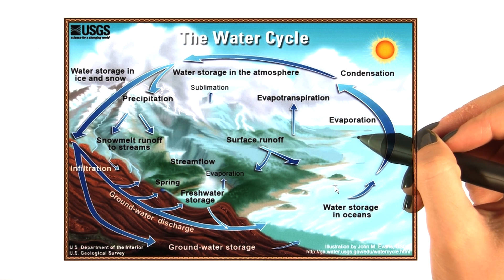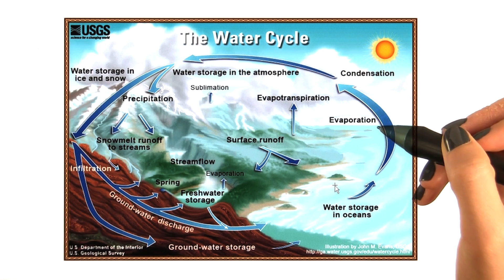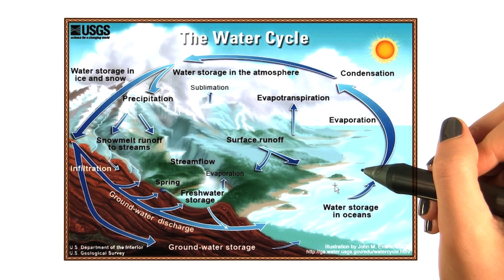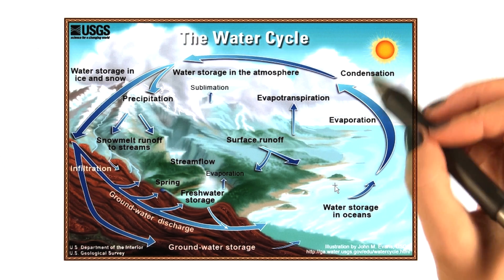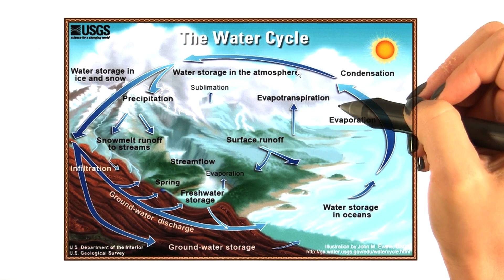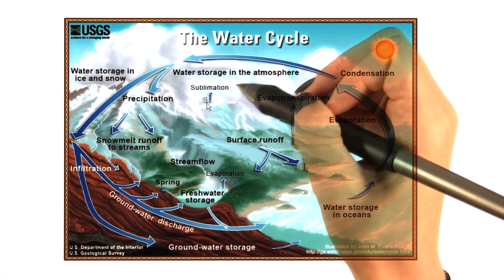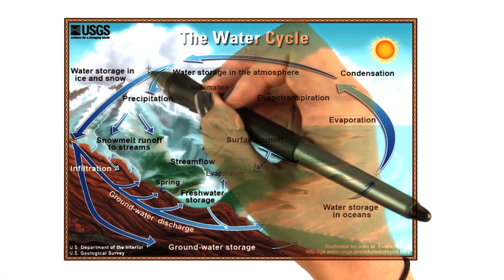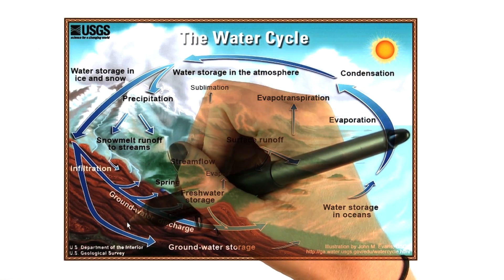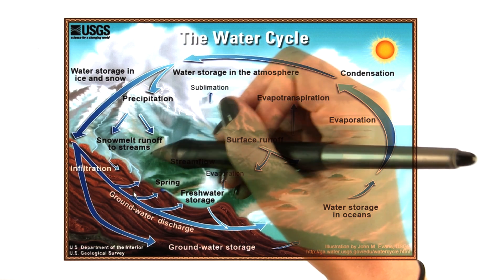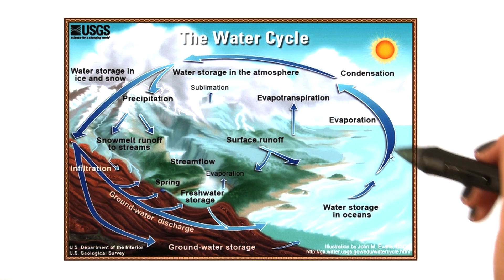Here's the water cycle model, which you were likely taught years ago while in school. As you can see, it explains that water in the oceans evaporates, forms clouds, and then goes back to earth as rain, ice, or snow. And eventually, through rivers and streams, the water goes back into the ocean.